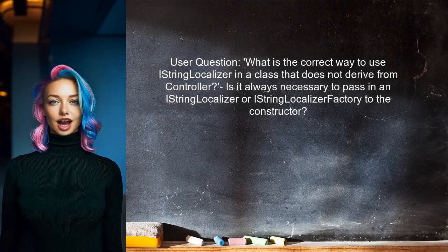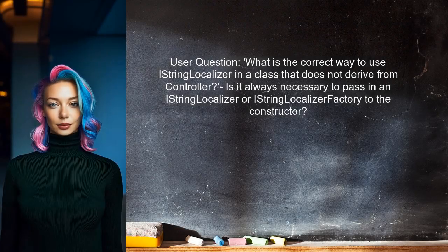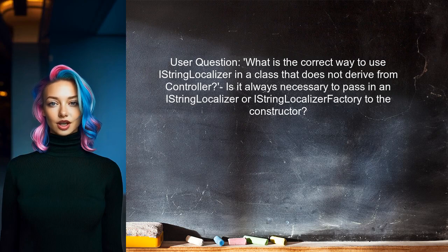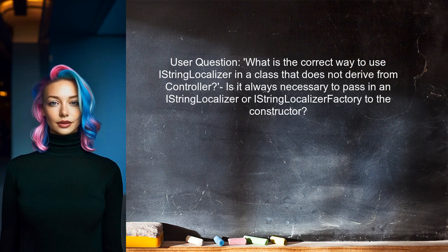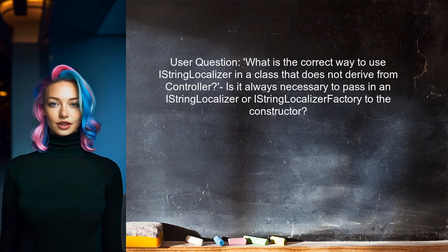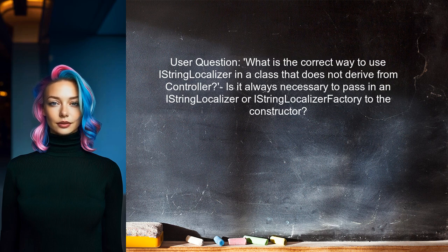Here's the specific question we're addressing. One user asked: what is the correct way to use a string localizer in a class that does not derive from a controller? They also wondered if it's always necessary to pass in an IStringLocalizer or IStringLocalizer factory to the constructor. Sound familiar? Let's explore this together.